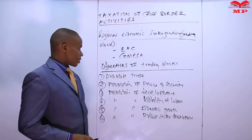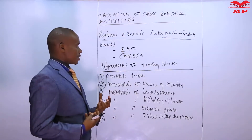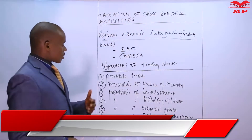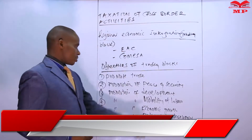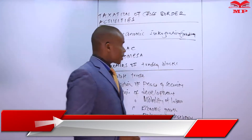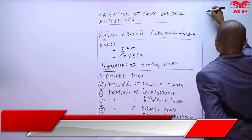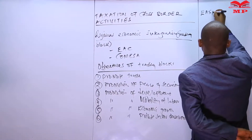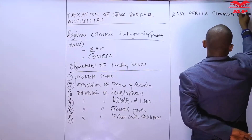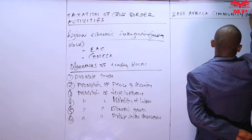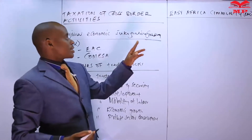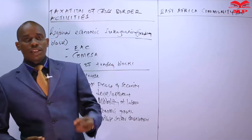Those are some of the objectives of trading blocks — the things that make trading blocks necessary to establish. We will now look at specific trading blocks, starting with the EAC, that is the East Africa Community, followed by COMESA.